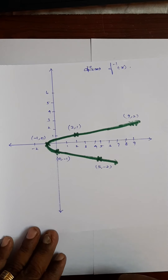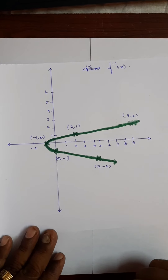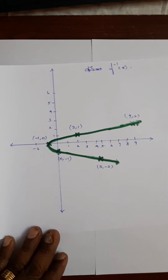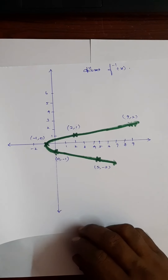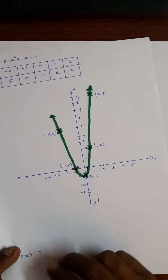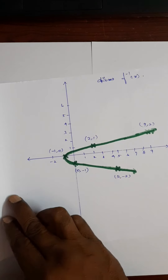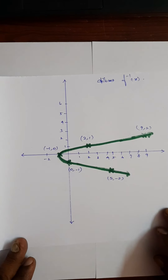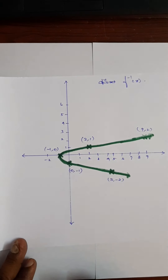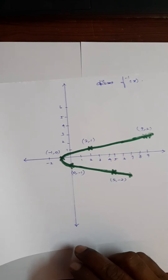Now we have got this diagram. The diagram is in the upward direction. If you turn it 90 degrees clockwise, you are getting the inverse graph. So, without drawing the diagram separately, we can find the inverse. Some more examples are coming.